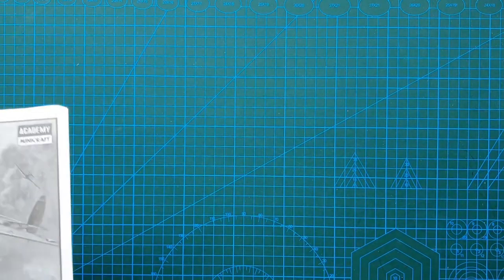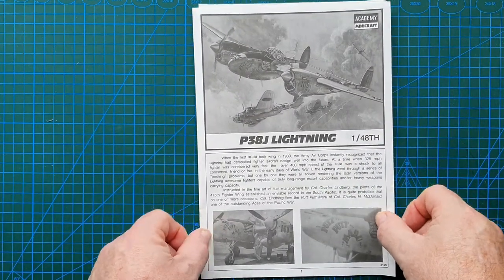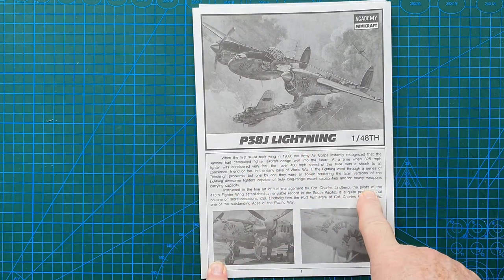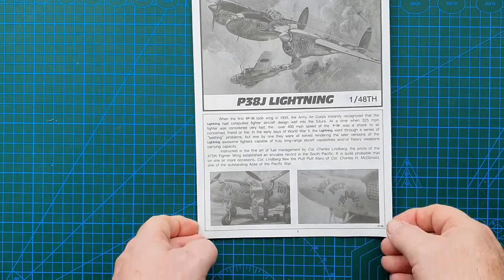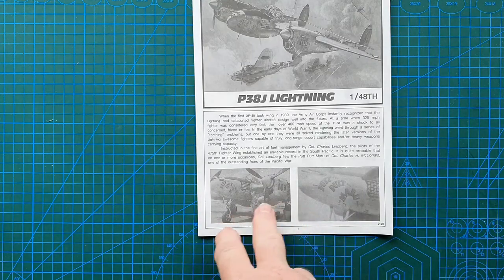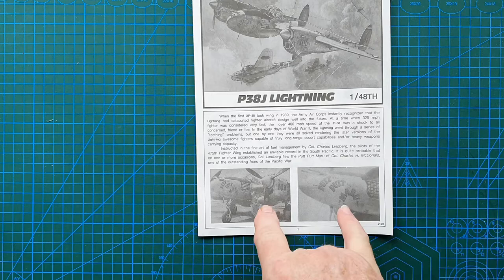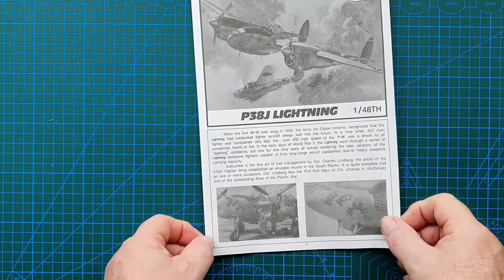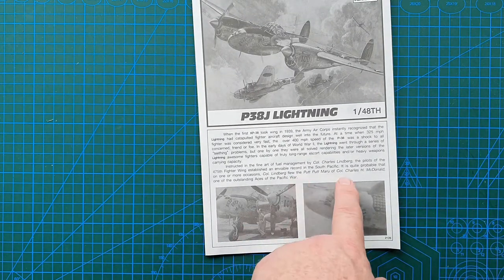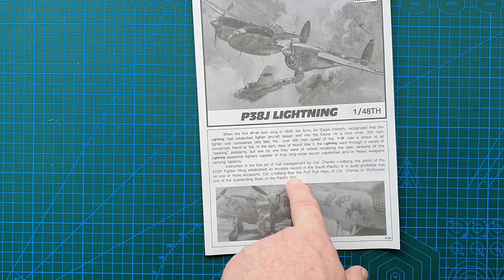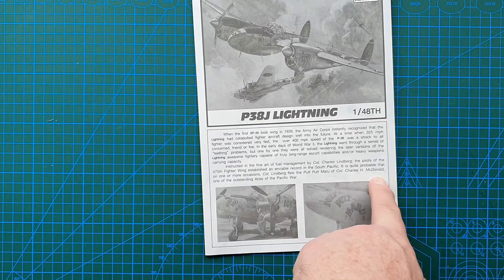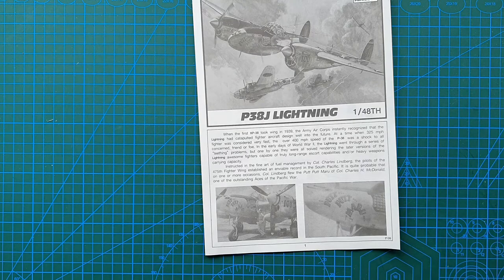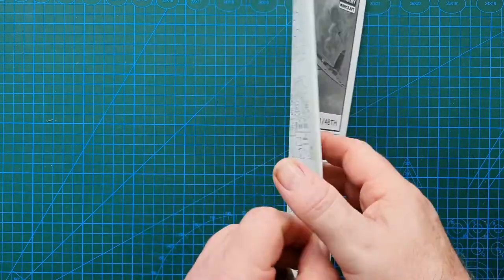Let's have a look at the instructions. P-38J in English, gives you a brief rundown of the history of the aircraft. Down here you've got two photos, unfortunately not very clear, of the actual aircraft that is depicted in this kit, which is putt-putt maroon. This is flown by Colonel Charles H. MacDonald, one of the outstanding aces of the Pacific War. That's pretty good.